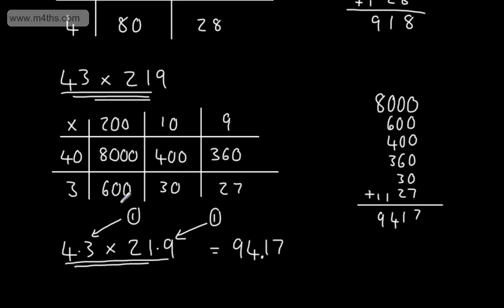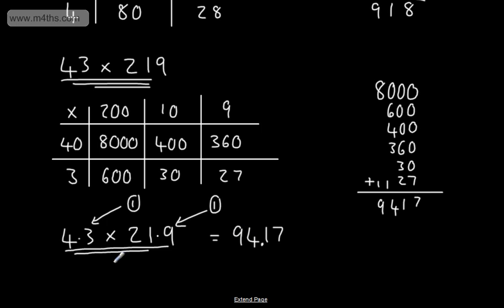Another alternative is to say that this one has got 10 times smaller, this one has got 10 times smaller, so our answer is going to be 100 times smaller. And if you think 100 times smaller means that we're going to go from 9417 to 94.17. So with this one, if we have now 4.3 and we multiply this by 2.19, then our answer is going to be 9.417.